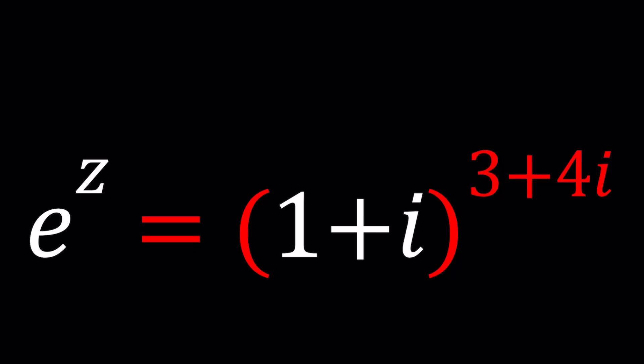We're raising a complex number to a complex power. What is that supposed to mean? Is that going to be a complex number? Can it be a real number? Let's find out. So on the left hand side we have something nice because it's e to the power z. On the right hand side though, we need to do a little bit of work, especially with the base.